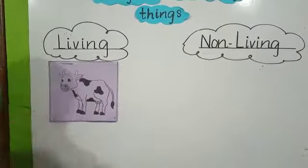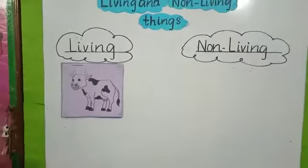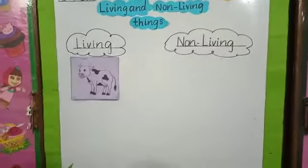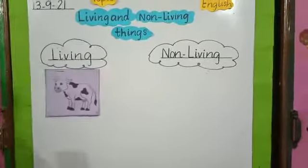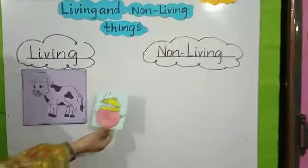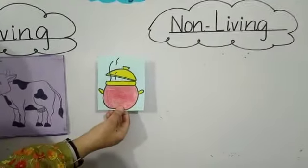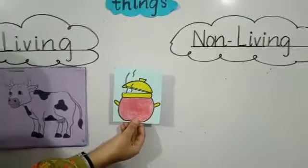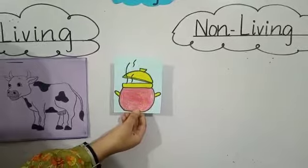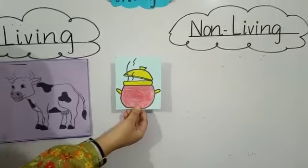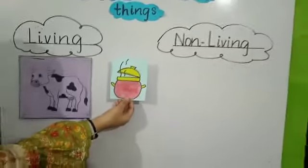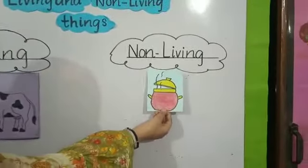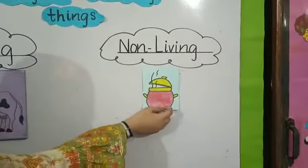If you have to paste it or not, you can draw it yourself. Now I will show you another object. You have to tell me if it is living or non-living. We have a pot — Mama is making food in it. The pot can't move from itself. So this is a non-living thing. We will paste it in the non-living things column.